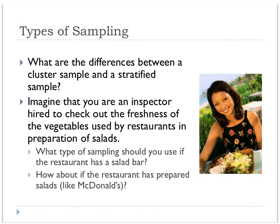I've got a scenario here that might help you keep those two straight in your head. Imagine that you've been hired by the city to go and inspect restaurants and look at their vegetables that they serve in their salads, making sure that they're really fresh and nobody gets sick from them. So there's two types of restaurants: one like an Outback Steakhouse that has a salad bar where you pick and choose your toppings, and then there's restaurants like McDonald's where the salad is already prepared for you in a box.